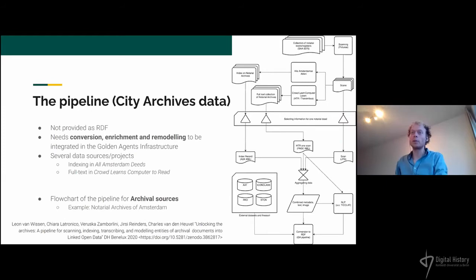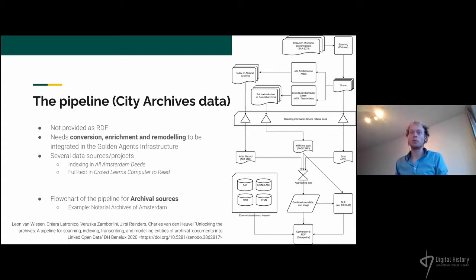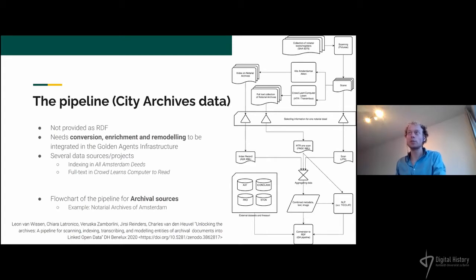We're going to take a closer look at the Amsterdam City Archives, because the model and the way we work with their data is very important for the Golden Agents project — this is the material to know things about common Amsterdammers. Contrary to the other data providers, the Amsterdam City Archives don't provide their data as RDF straight away, so we ourselves have to do some conversion, enrichment, and remodeling of the data in order for it to be integrated in the research infrastructure.